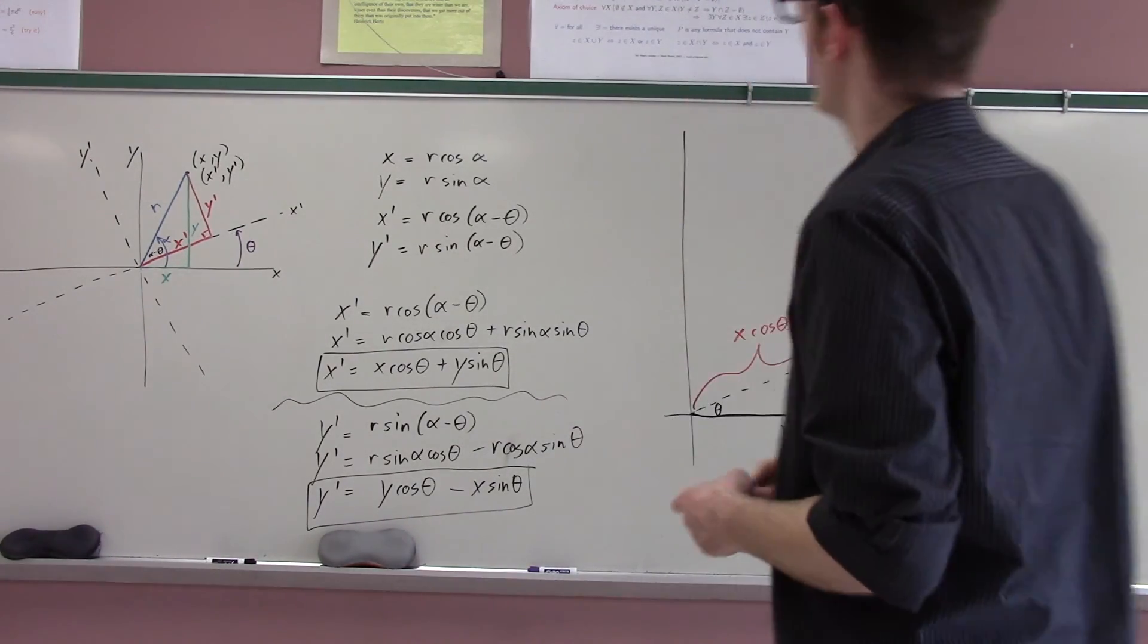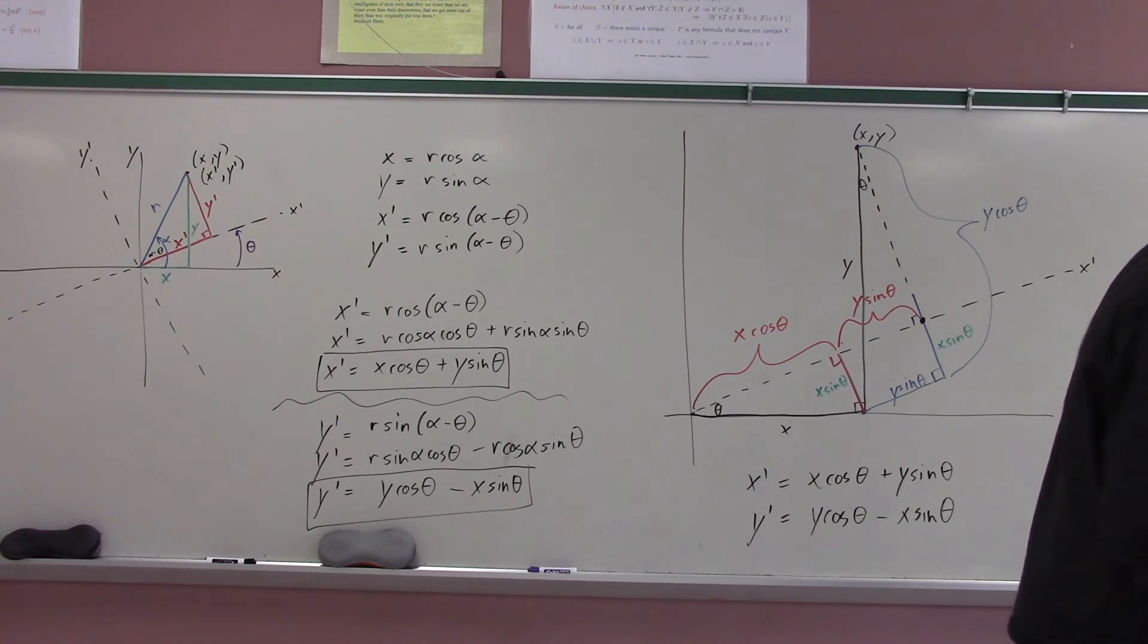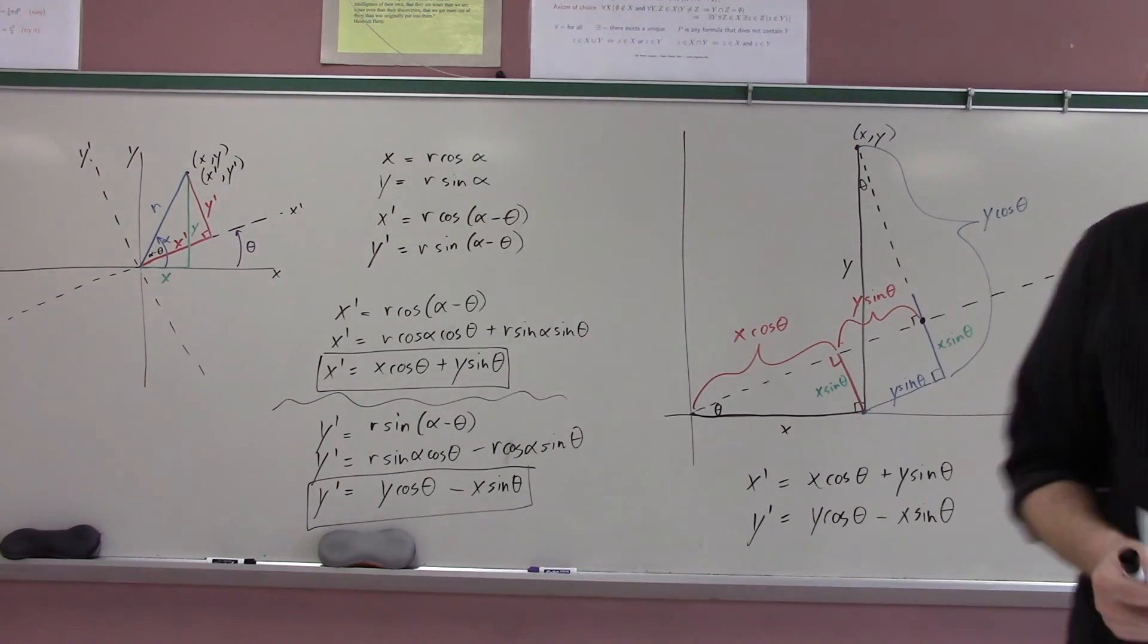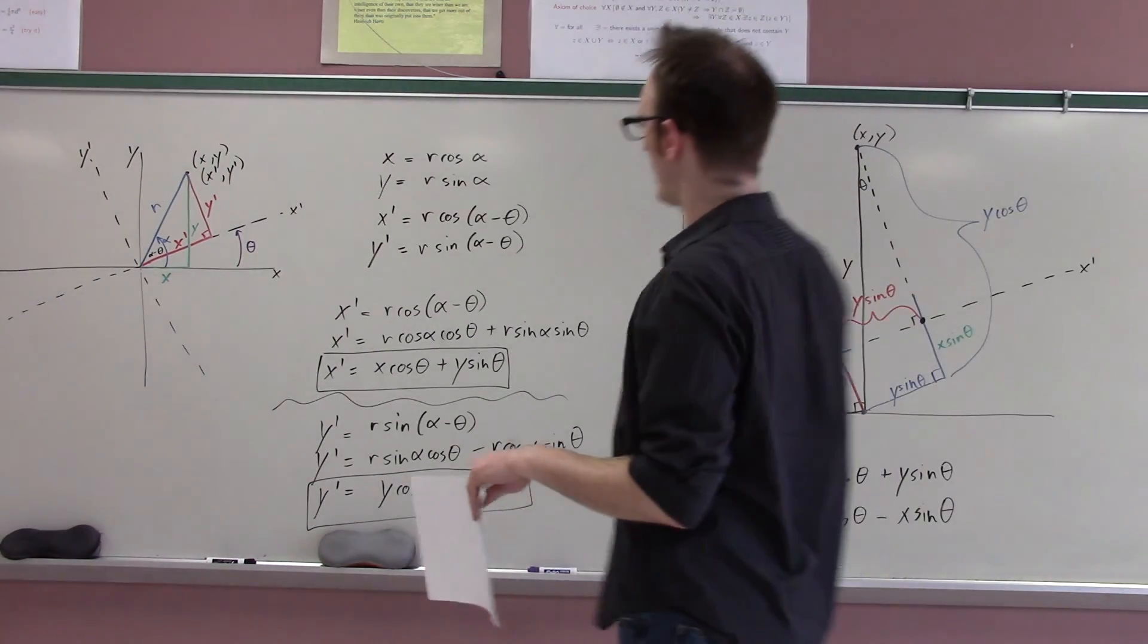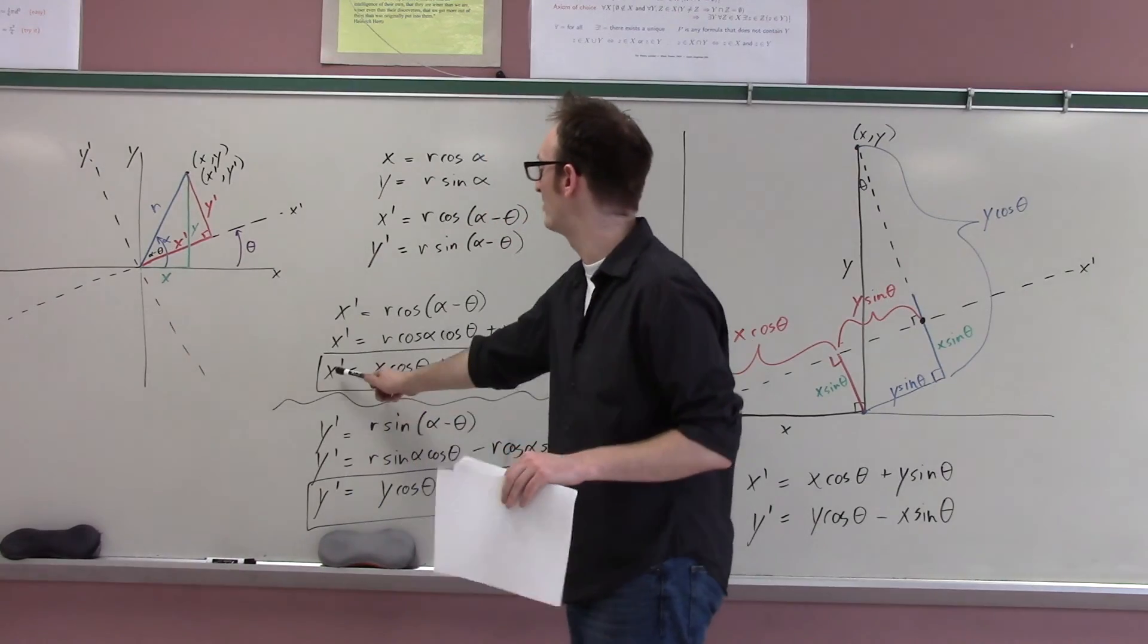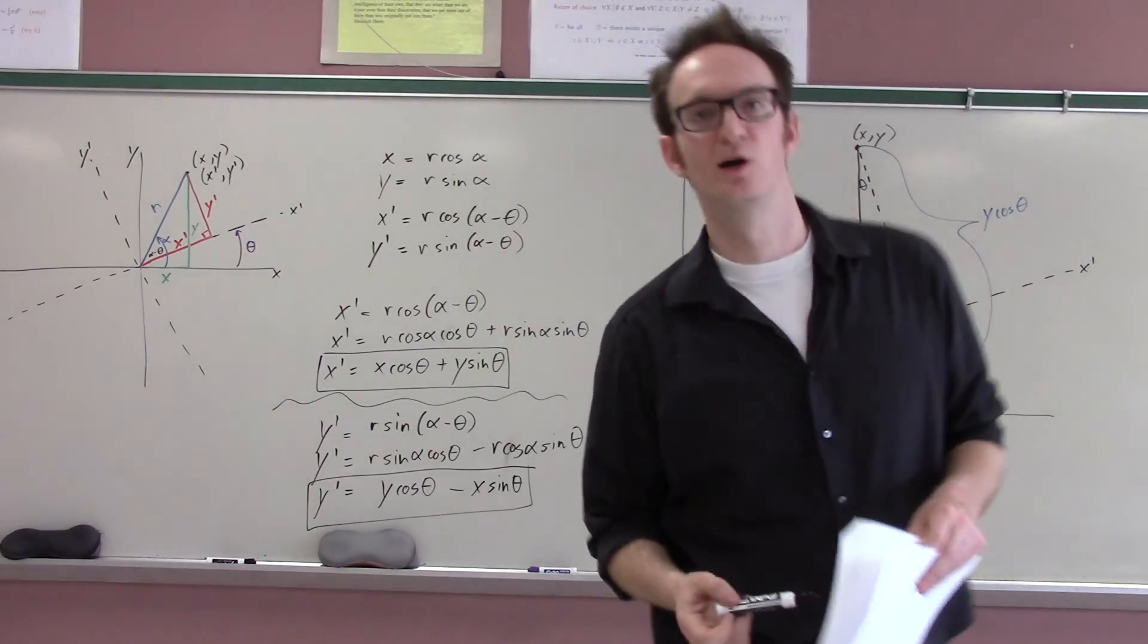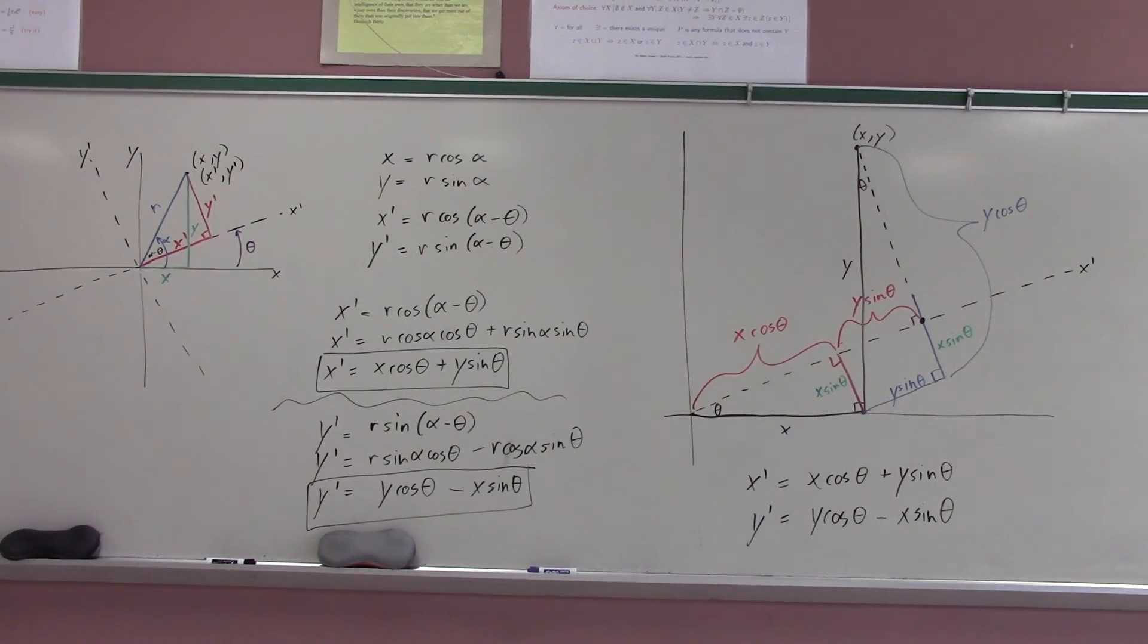So, whether you'd like to do it with polar and some angle difference trig identities, or whether you'd like to do it in one big geometry picture, that's up to you. What we have essentially achieved is an equation for the x prime and y prime coordinates of any point, in terms of the x and y coordinates and the angle of rotation. Okay. Pause. We're going to start a new video in a minute.